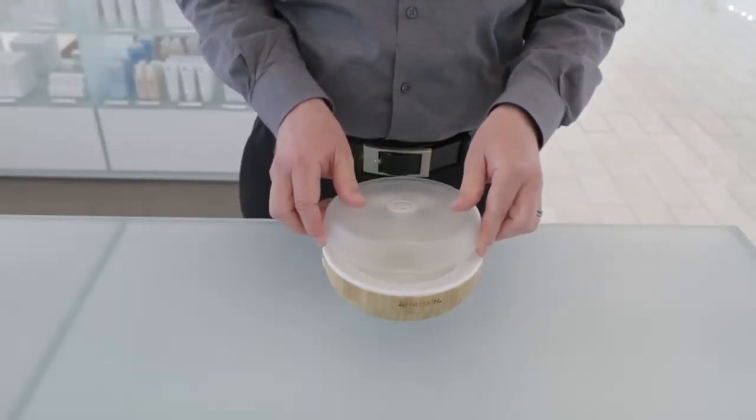Once the diffuser has water and oil and is connected to a power outlet, fit the glass dome properly on the wooden base.